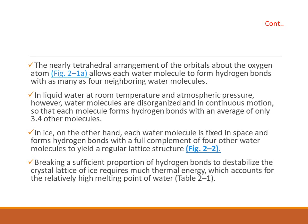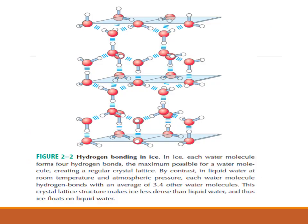Breaking a sufficient proportion of hydrogen bonds to destabilize the crystalline lattice of ice requires a great deal of thermal energy, which accounts for the relatively high melting point of water. This crystal lattice makes ice less dense than liquid water, and thus ice floats on liquid water.